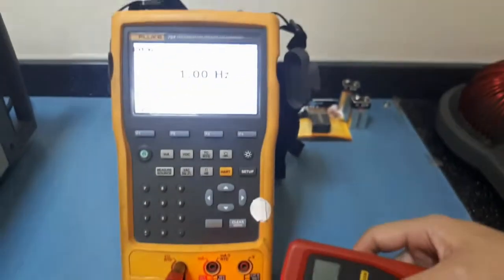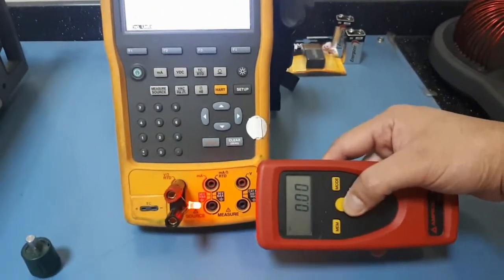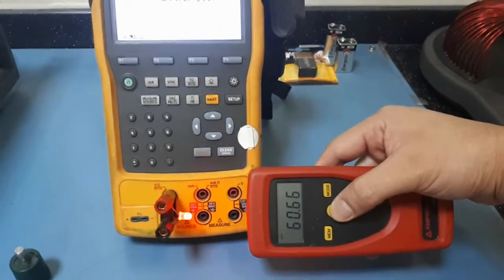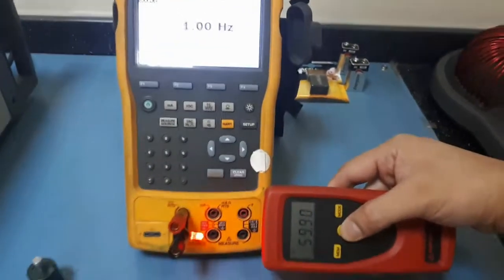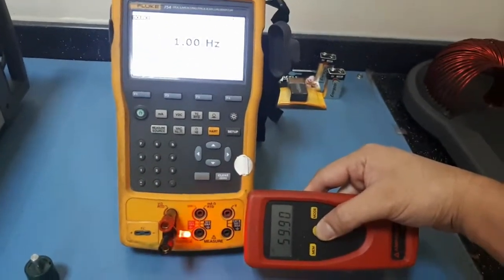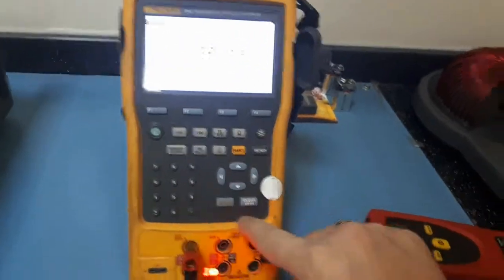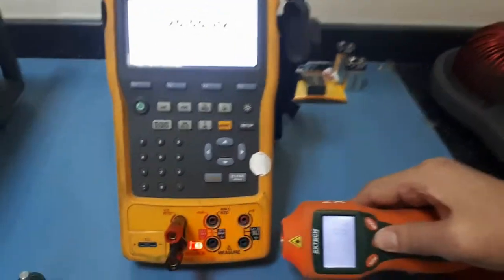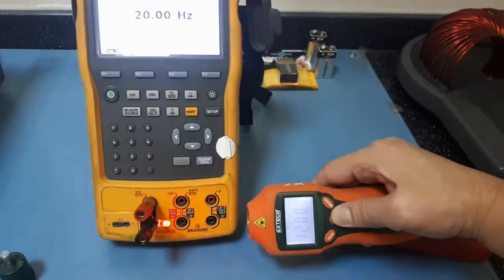The other one. 59.9 at 1 hertz. Now 20 hertz. Faster blinking.